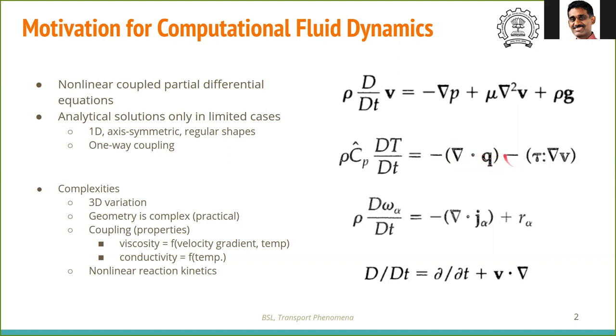Apart from that, there could be coupling between these equations. Where does the coupling come from? In an isothermal case, viscosity is constant. But viscosity could be dependent on temperature. If temperature changes in the domain, viscosity also changes. So there's coupling between these equations - regions of high temperature may have low viscosity or vice versa.